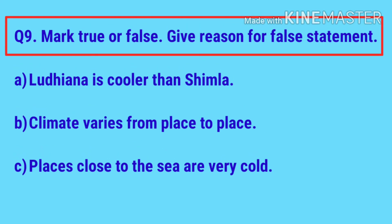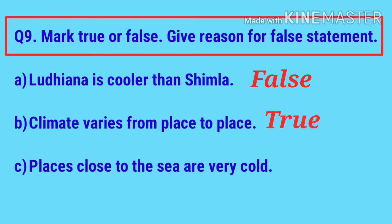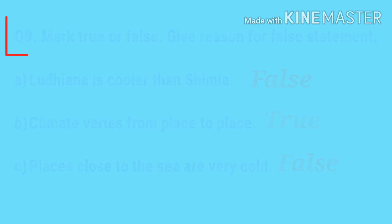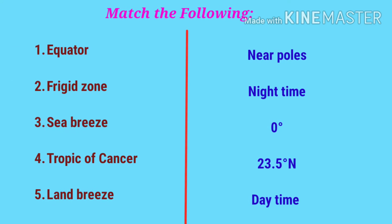First statement: Ludhiana is cooler than Shimla — true or false? It is false because Shimla is cooler than Ludhiana. The reason is that Shimla is at a higher altitude than Ludhiana. Next: climate varies from place to place — true or false? It is true. Last statement: places close to the sea are very cold — true or false? It is false because places close to the sea have moderate climate.